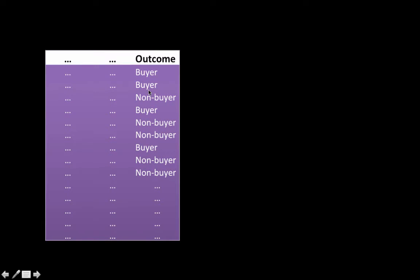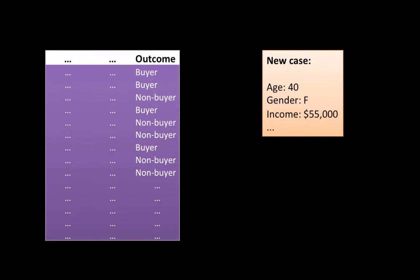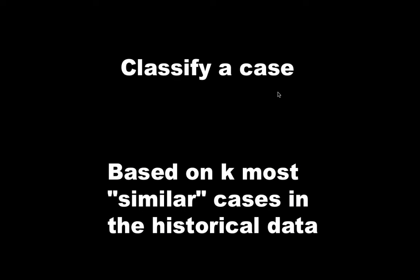So this is our historical information. Just for convenience, I have shown only a small part of the information. I have not even shown all the attributes. So this is what we have. Now, along comes a completely new case for which we know the values of all the attributes like age and gender and income and lots of other attributes. Now our question is, will this person be a buyer or a non-buyer? That's our classification problem right here. The truly simple intuition is when you're given a new case, you classify it based on the K most similar cases in the historical data.